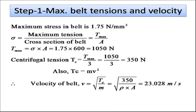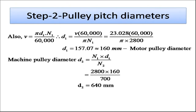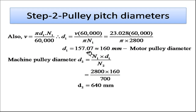With belt velocity known, we find the pulley diameters: d1 = v × 60,000 / (π × n1) = 23.028 × 60,000 / (π × 2800) = 157.07 mm, which rounds to 160 mm. This is the motor pulley diameter.